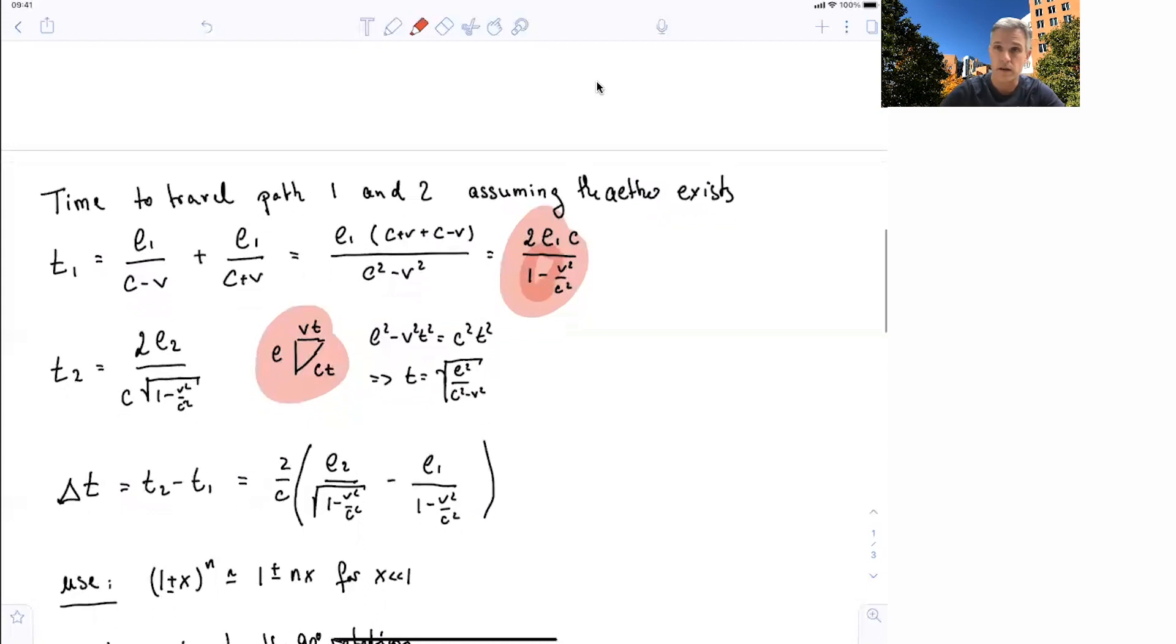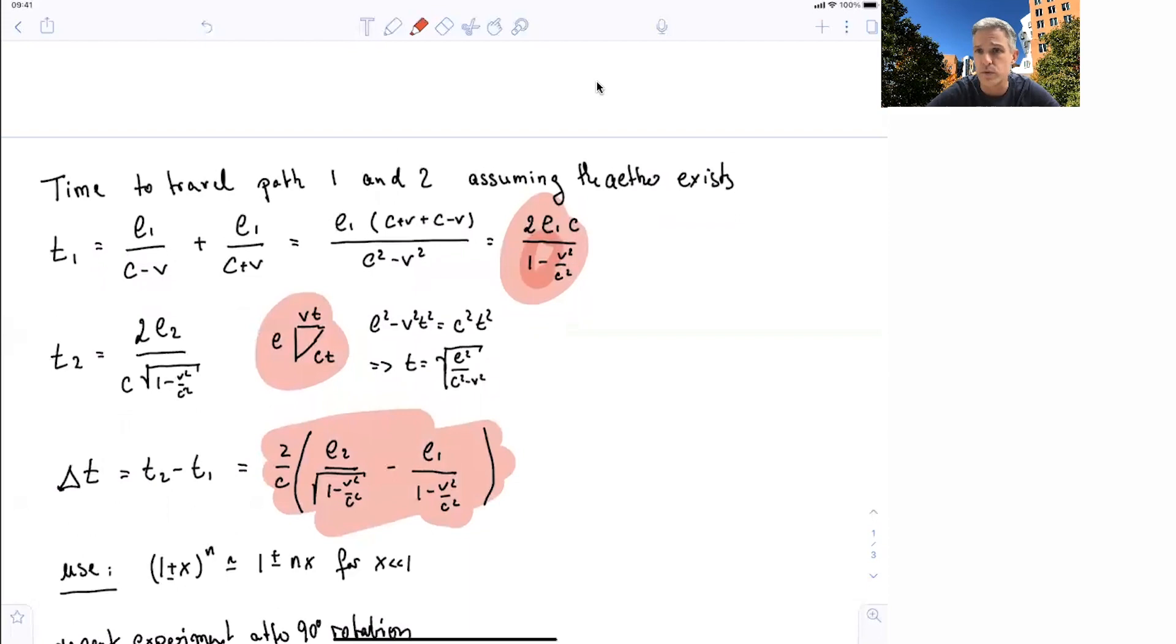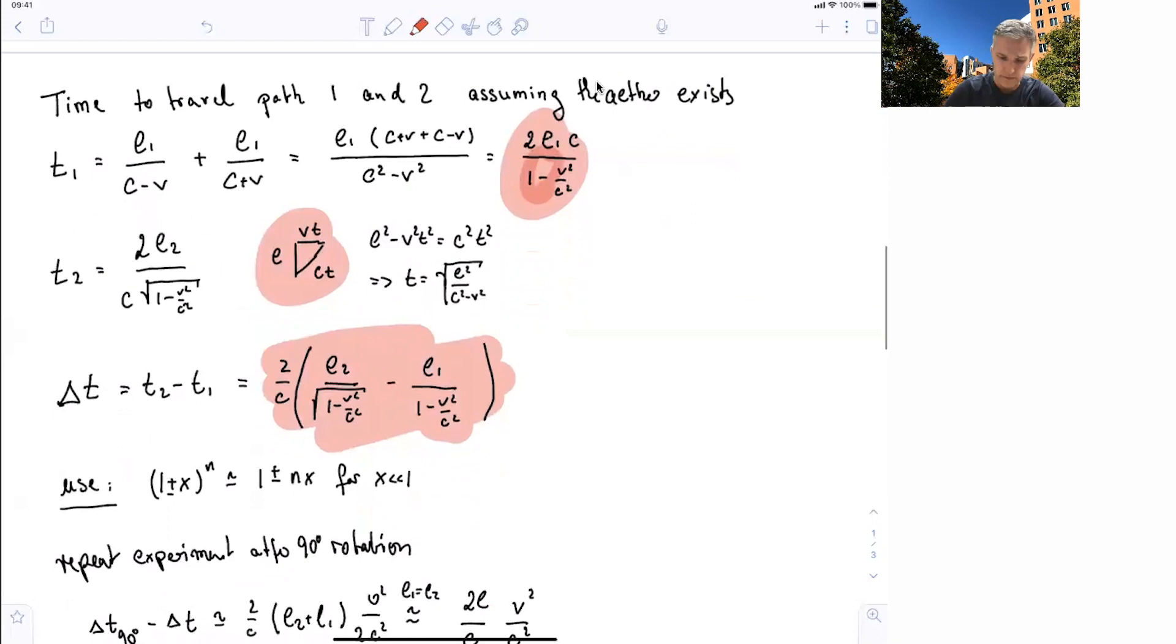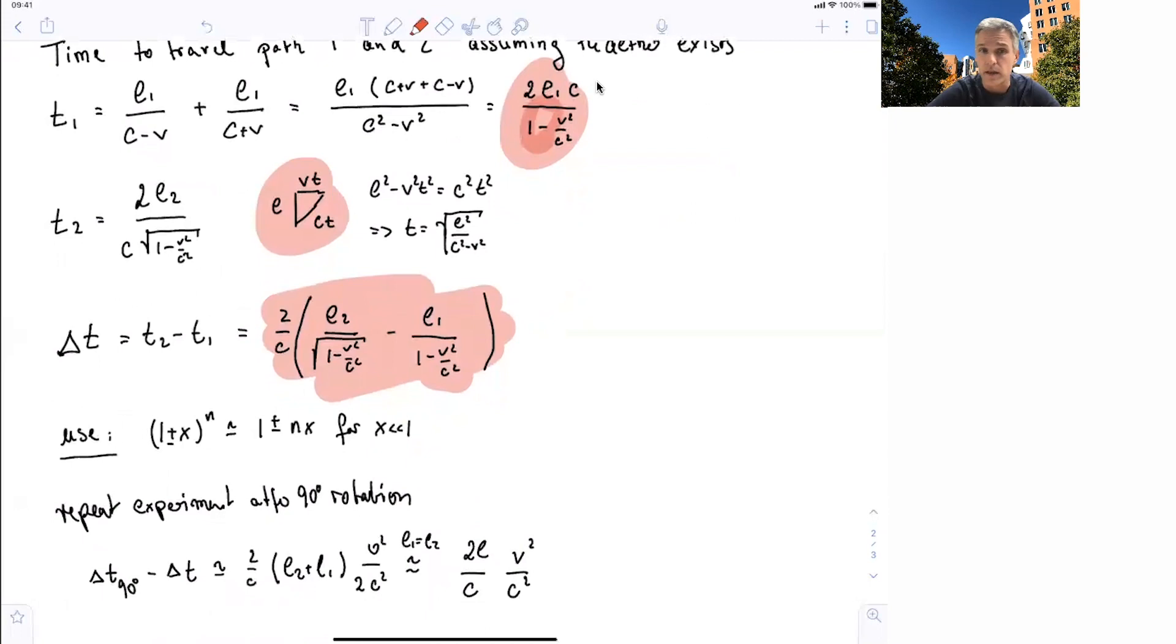What's important is the time difference for the lights traveling the two paths. And you find that the time difference delta t, t2 minus t1, is given by this little bit complicated looking equation. So now in the experiment, you want to set up L1 equal to L2 to simplify, but you might not be able to do this very precisely. What you can do, however, is rotate the table. If you rotate and then compare the difference of the differences, you find that here